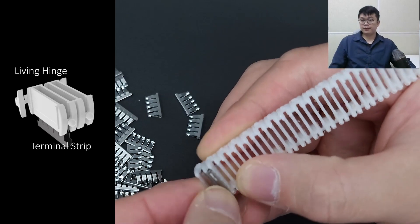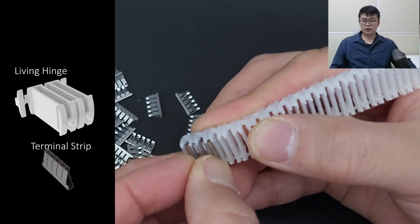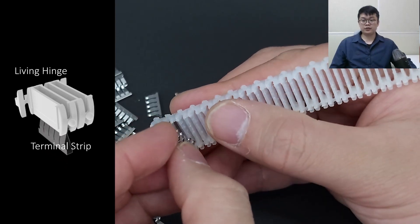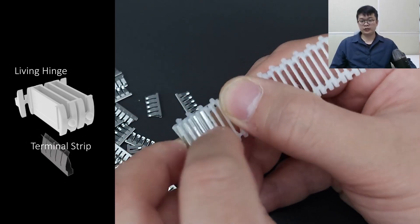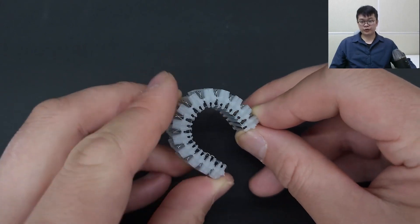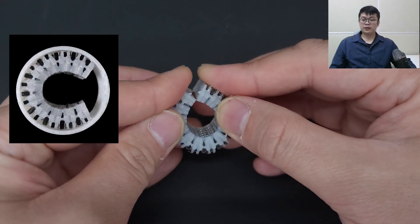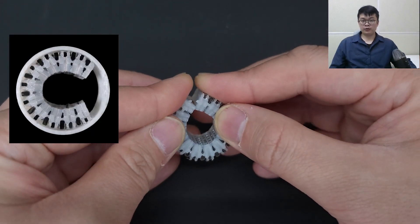FlexBoard can be easily fabricated. After 3D printing the FlexBoard structure, users can simply embed the terminal strip into the living hinge. As you can see, while keeping terminal strip, FlexBoards can bend up to 12 degrees per hinge, either downward or upward bending.